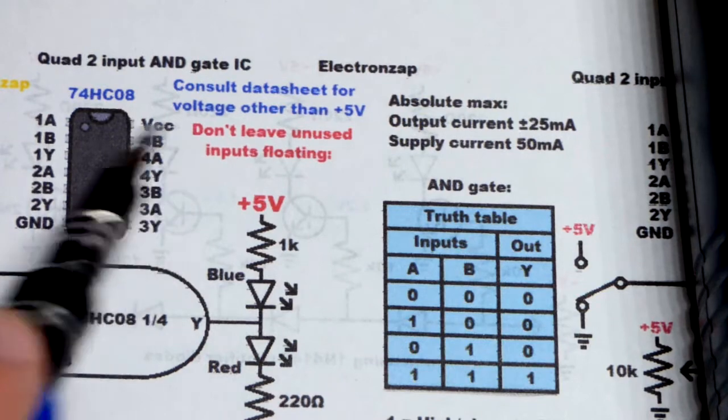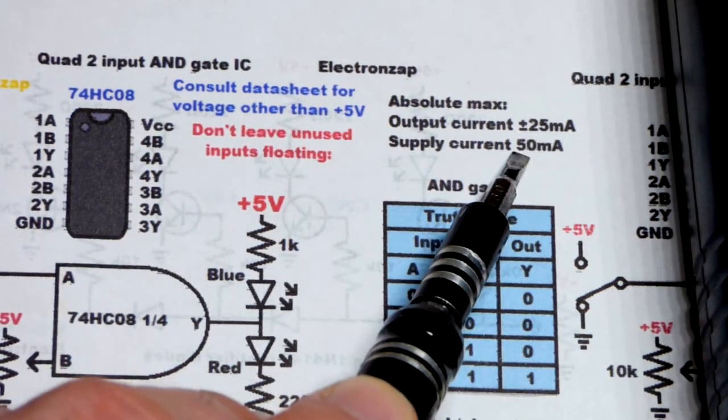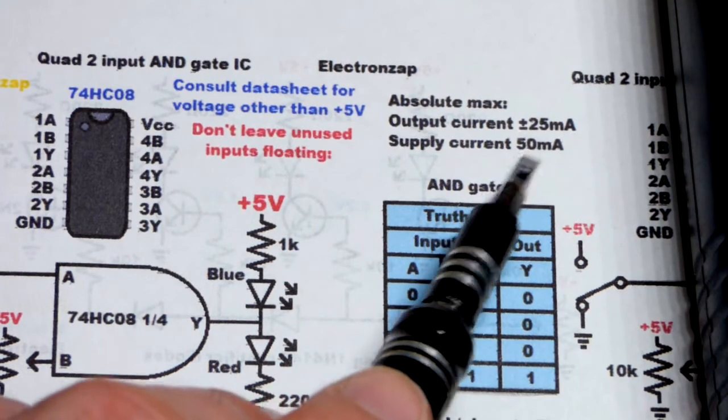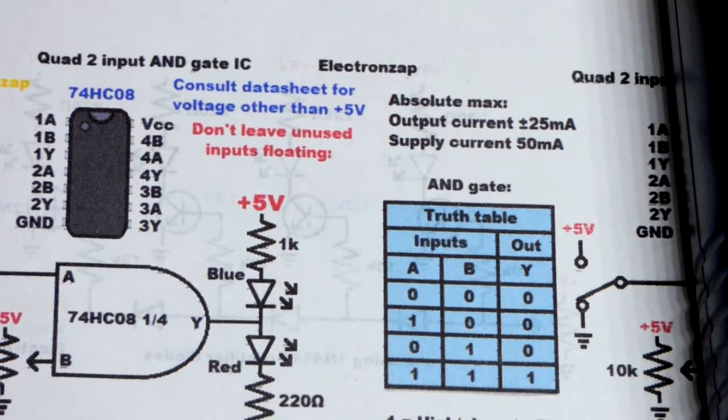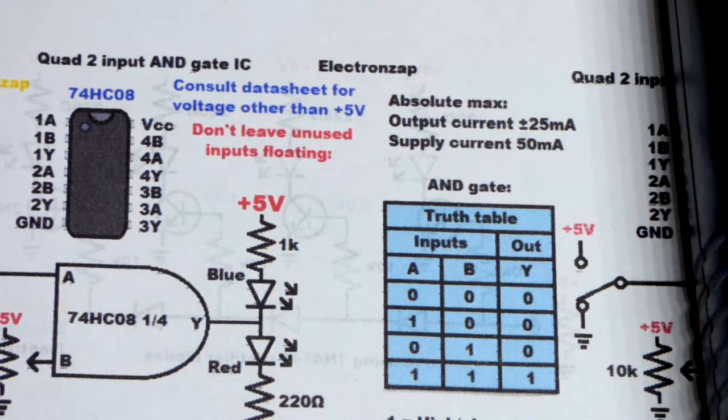But there's a total supply current of 50 milliamps. So if you're using all four of them you're going to have to keep them below 25 milliamps so that when you add them all up they stay below 50 milliamps. So again I always check the data sheet, but this should be a good starting point if you're going to use integrated circuits like this.